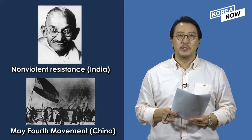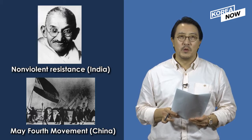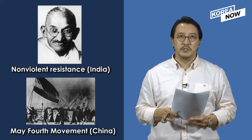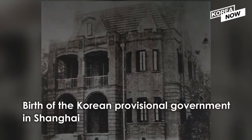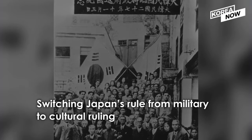Though the movement failed to bring about its paramount goal of national independence, it escalated into clashes with colonial authorities that lasted throughout the century, influencing movements such as Mahatma Gandhi's Nonviolent Resistance, or Satyagraha in India, and the May 4th movement of Beijing students in China that year. It was significant as well in strengthening Korean national unity, leading to the establishment of the Korean provisional government in Shanghai, and switching Japan's rule from military to cultural ruling.